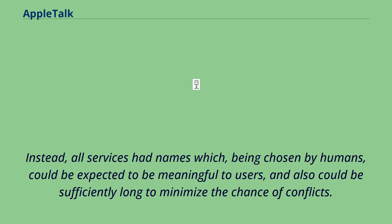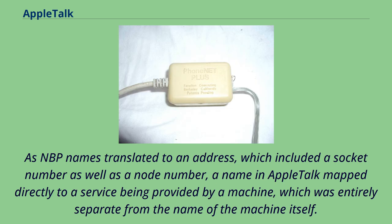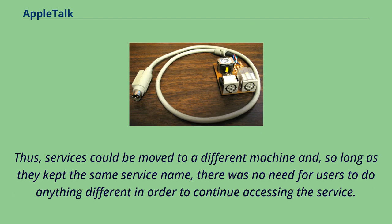As NBP names translated to an address which included a socket number as well as a node number, a name in AppleTalk mapped directly to a service being provided by a machine, entirely separate from the name of the machine itself. Thus, services could be moved to a different machine and, so long as they kept the same service name, there was no need for users to do anything different. The same machine could also host any number of instances of services of the same type without any network connection conflicts.